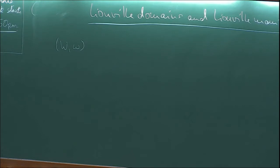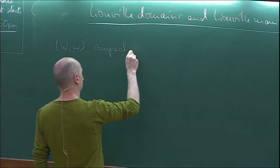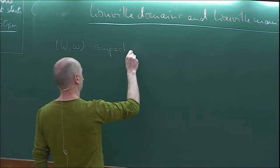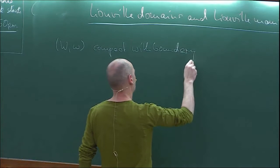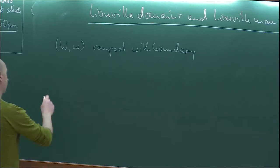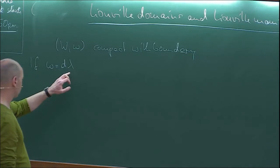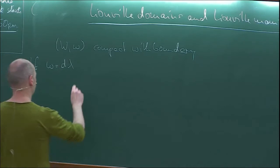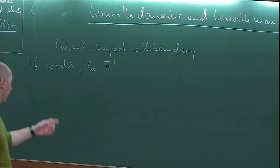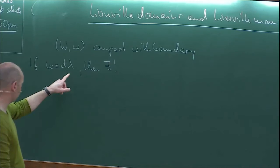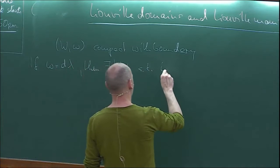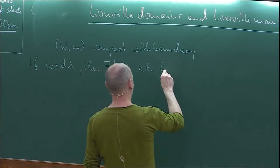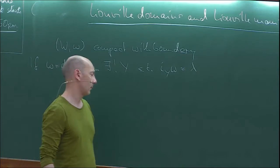Suppose we have a compact symplectic manifold with boundary. Let's also assume that omega is actually exact. If that's the case, then we can dualize this one-form. There is a unique vector field — the same way I did this for the differential of a function. Whenever I have a one-form, I can turn it into a vector field. So there exists a unique vector field Y such that if I insert Y into omega, I get lambda.